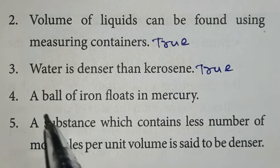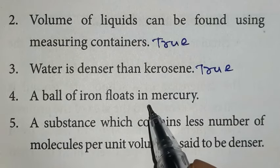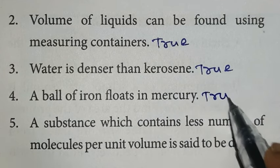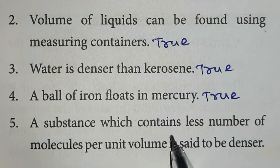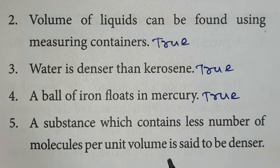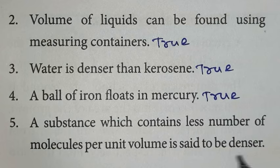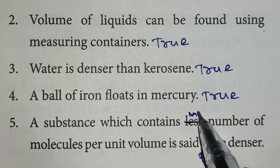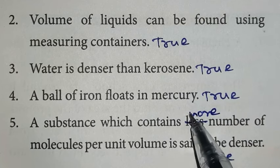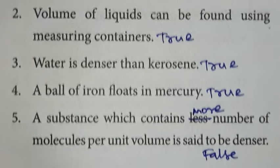Fourth one, a ball of iron floats in mercury. True. Fifth one, a substance which contains less number of molecules per unit volume is said to be denser. False. That is more number.